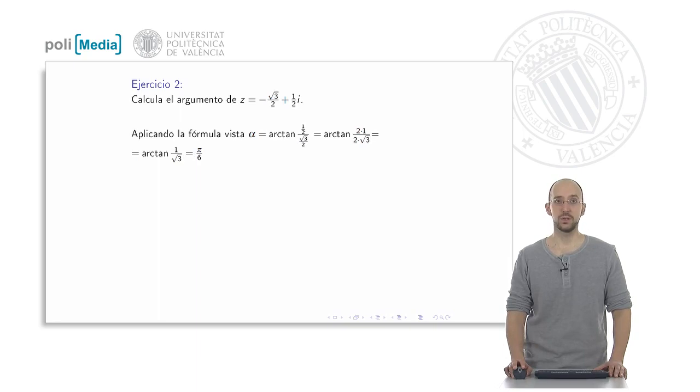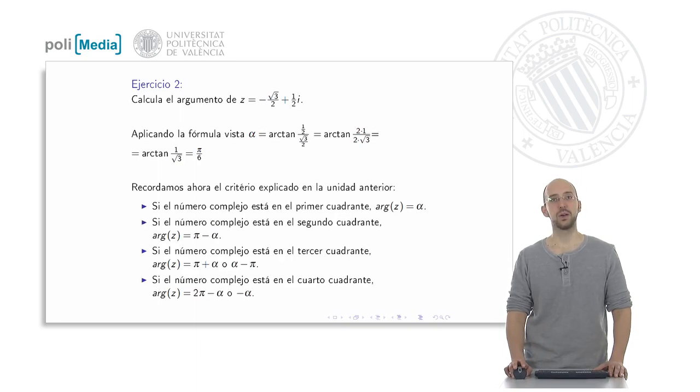Or what is the same, 30 degrees. Well, if we study now in which quadrant the complex number is, as we can see, the real part is negative and the imaginary part is positive. That is to say, we would be in the second quadrant.